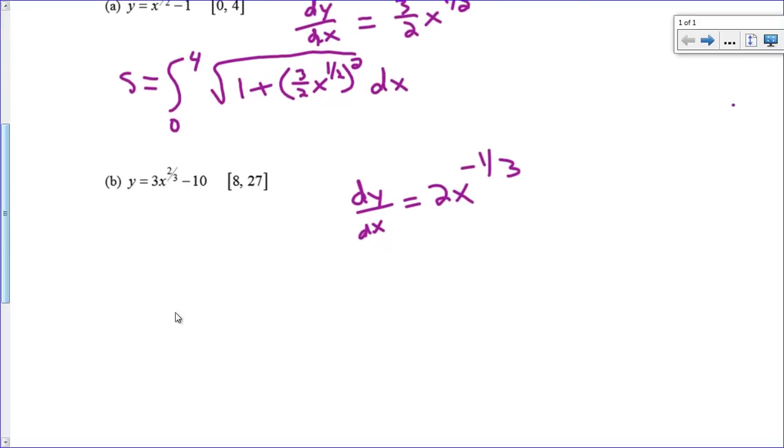Then your arc length, s for arc length, I don't know why, but that's what we're using, is the integral between 8 and 27 of the square root of 1 plus your derivative squared. So 2x to the negative 1/3 squared. That is all you do to find total distance traveled dx.